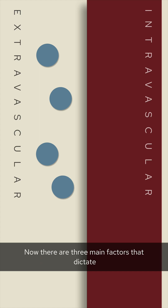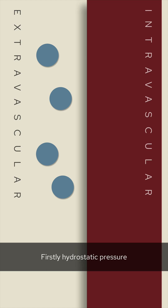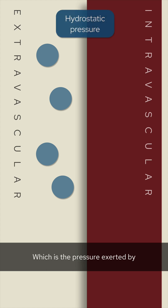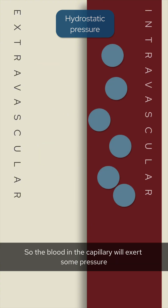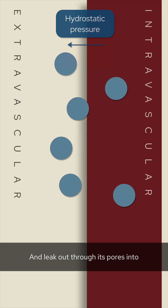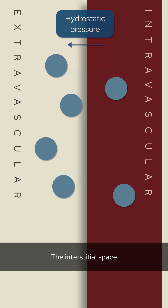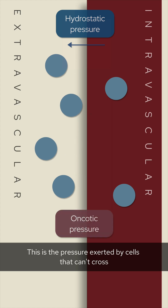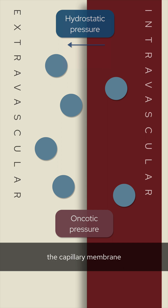There are three main factors that dictate how fluid moves between the capillaries and interstitial fluid. Firstly, hydrostatic pressure, which is the pressure exerted by any fluid in a confined space. The blood in the capillary will exert some pressure and leak out through its pores into the interstitial space. Then there is oncotic pressure — the pressure exerted by cells that can't cross the capillary membrane,